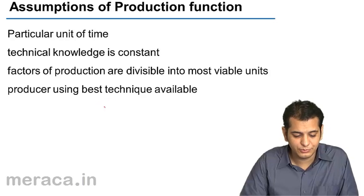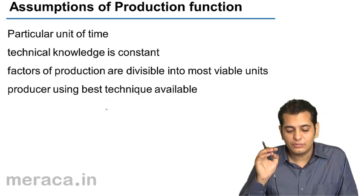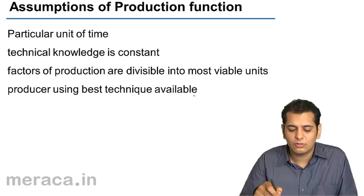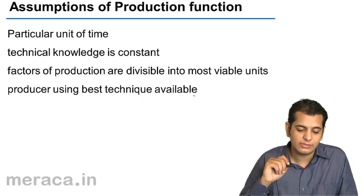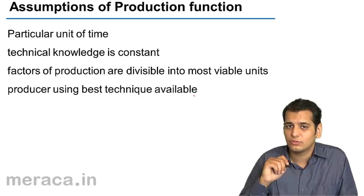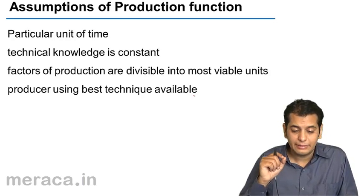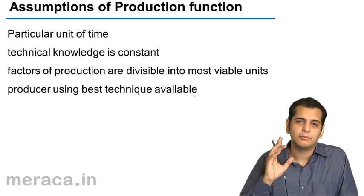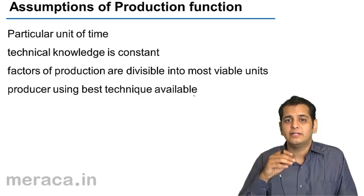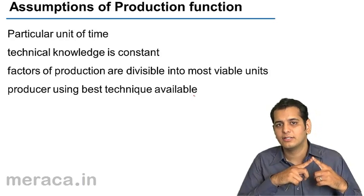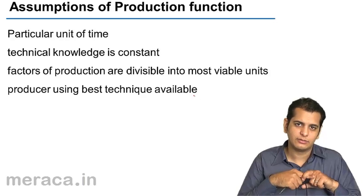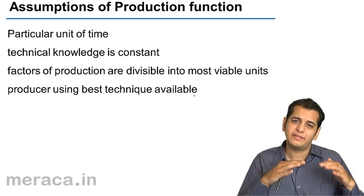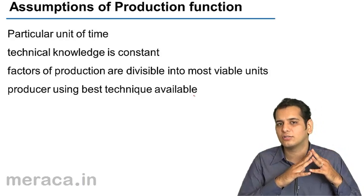The last assumption is that the producer is using the best technique available. You might think this is a contradiction to the second assumption that technological knowledge is constant. However, it means that when the producer starts, he is using the best technique available, but once he starts, the technology remains constant — he does not keep adopting or improving his technology.